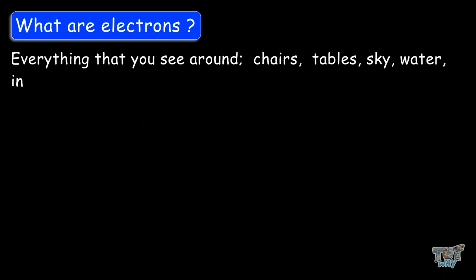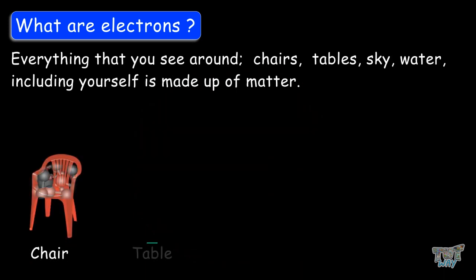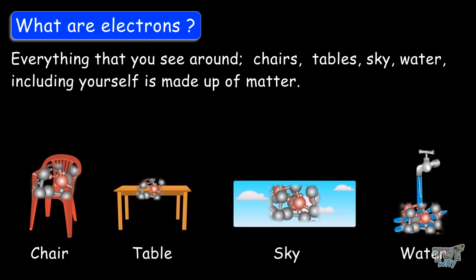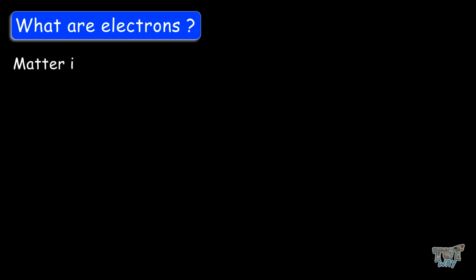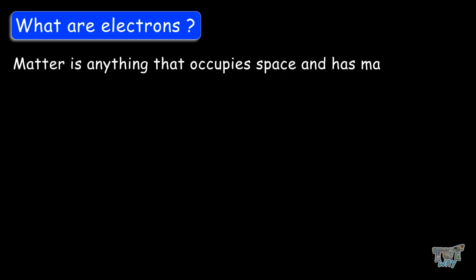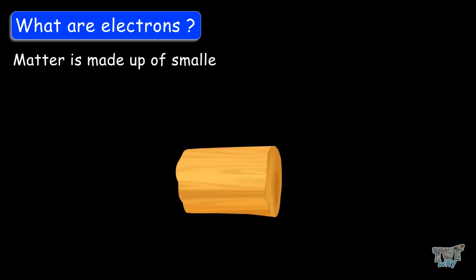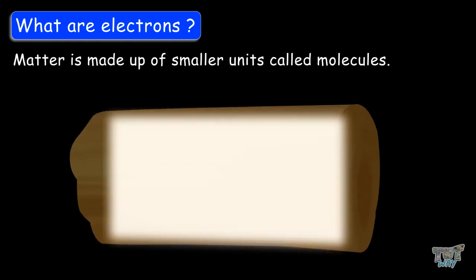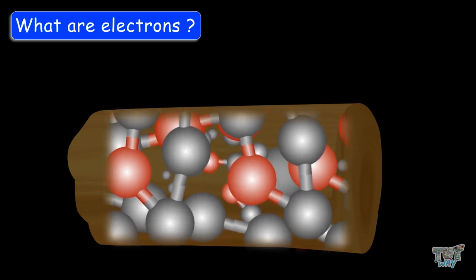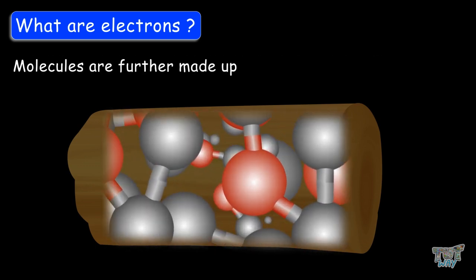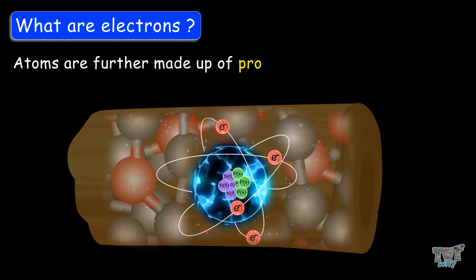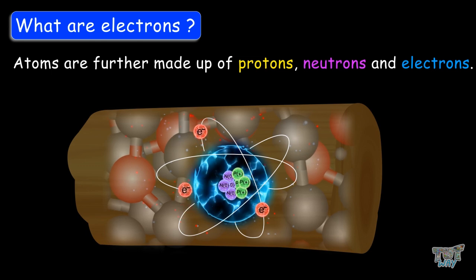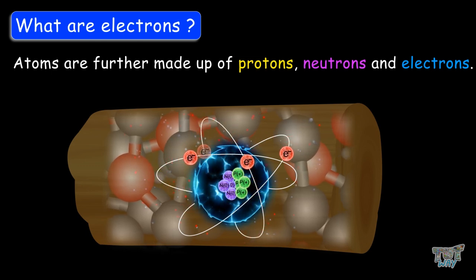Everything that you see around yourself — the chair, table, sky, water — absolutely anything is made up of matter. Matter is anything that occupies space and has mass. Matter is made up of smaller units called molecules, and molecules are further made up of atoms. Atoms are further made up of protons, neutrons, and electrons. So here comes the term electron.